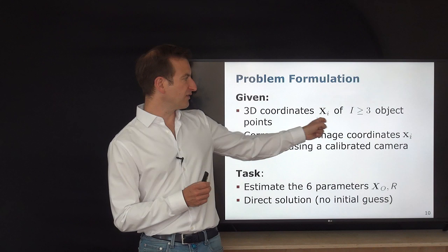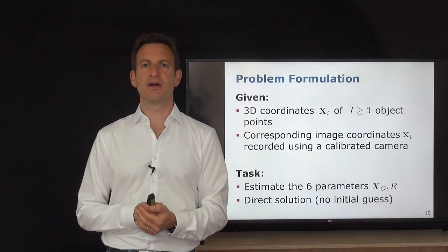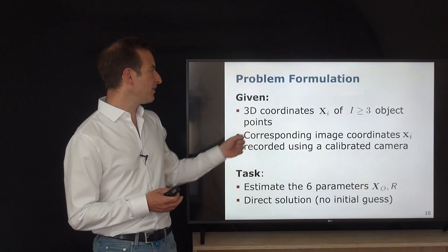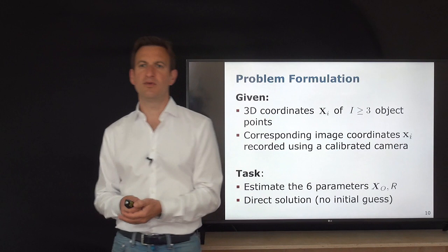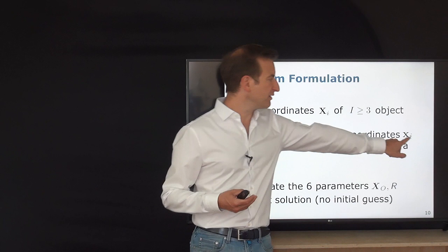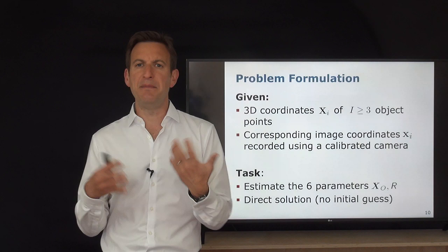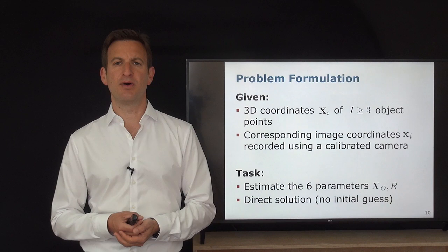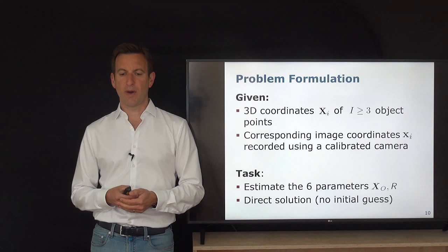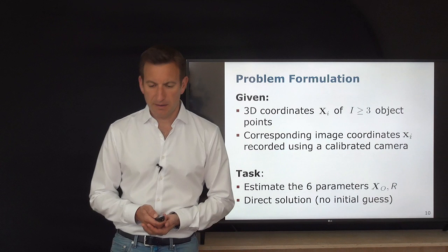More precisely: given 3D coordinates Xi (i ≥ 0) and their corresponding image coordinates recorded by the calibrated camera, with known data associations (no ambiguity in correspondences), our task is to estimate the six parameters of translation and rotation for our camera location in a direct solution. This is the spatial resectioning problem, known for about 160 years, and we follow the original solution proposed by Grunert.